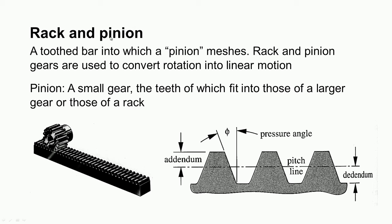In the rack and pinion type, the straight toothed bar is called the rack and the smaller wheel is called the pinion. Rack and pinion gears are used to convert rotation into linear motion — when the pinion rotates, the rack moves linearly. The pinion is a small gear whose teeth fit into those of the larger gear or the rack.